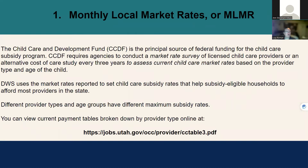First, let's look at Monthly Local Market Rates, or MLMR for short. The Child Care and Development Fund (CCDF) is the principal source of federal funding for the child care subsidy program. CCDF requires agencies to conduct a market rate survey of licensed child care providers, or an alternative cost of care study, every three years to assess current child care market rates based on provider type and age of the child. DWS then uses the market rates to set child care subsidy rates that help subsidy-eligible households afford most providers in the state.